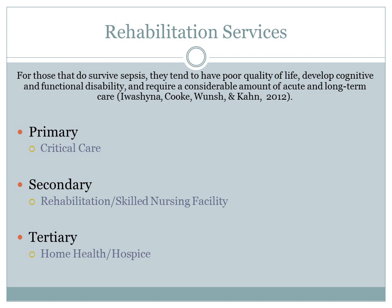Rehabilitation services such as primary, secondary, and tertiary services are often necessary for the sepsis patient. For those that do survive sepsis, they tend to have a poor quality of life and develop cognitive and functional disabilities, often requiring a considerable amount of acute and long-term care. Primary rehabilitation services include those provided from acute care facilities, often in critical care units. Early recognition and intervention is crucial, including monitoring of vital signs for tachypnea, tachycardia, hypotension, fever, and decreased urine output, as well as fluid and antibiotic administration, supplemental O2, and mechanical ventilation. After primary services, secondary services at a skilled nursing facility or rehab facility may be necessary for functional rehabilitation or further IV antibiotic therapy. Once complete, further rehabilitation such as home health or hospice may also be needed.